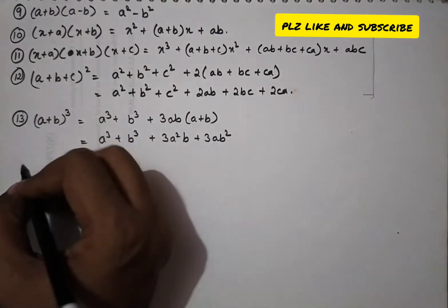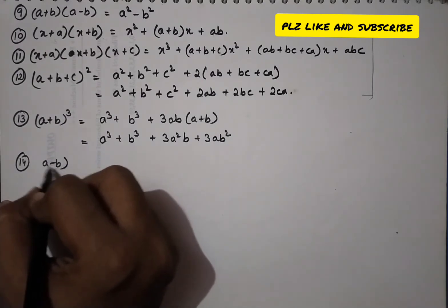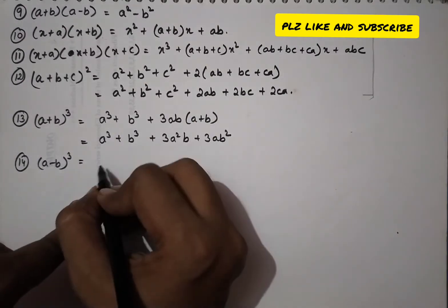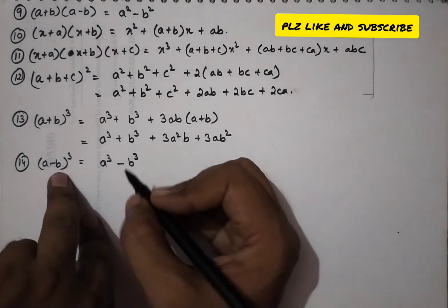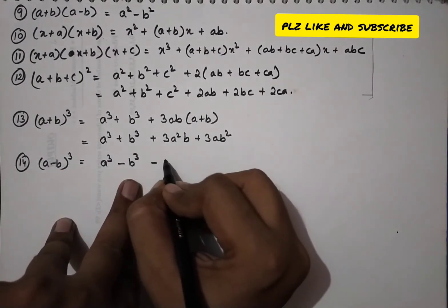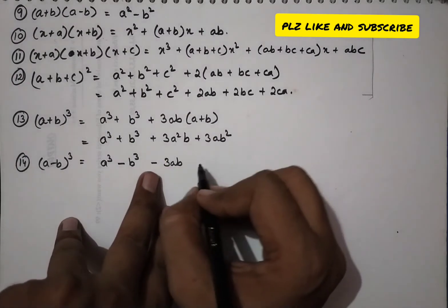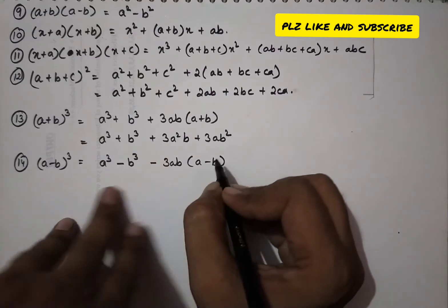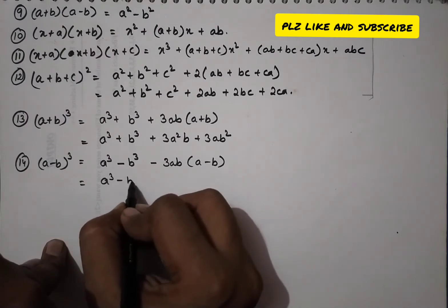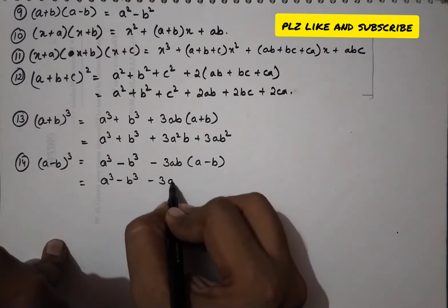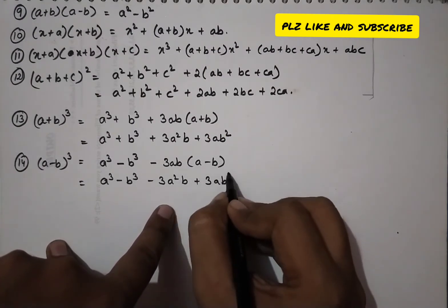We also have (a − b) whole cube. Since the cube of a negative sign is negative, this gives a³ − b³ − 3ab(a − b), and expanding gives a³ − 3a²b + 3ab² − b³.